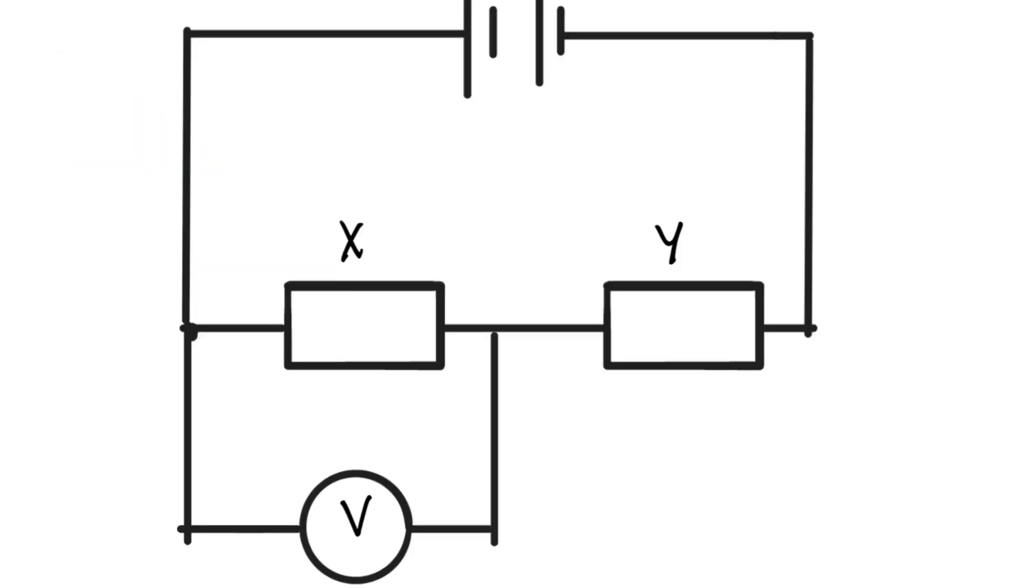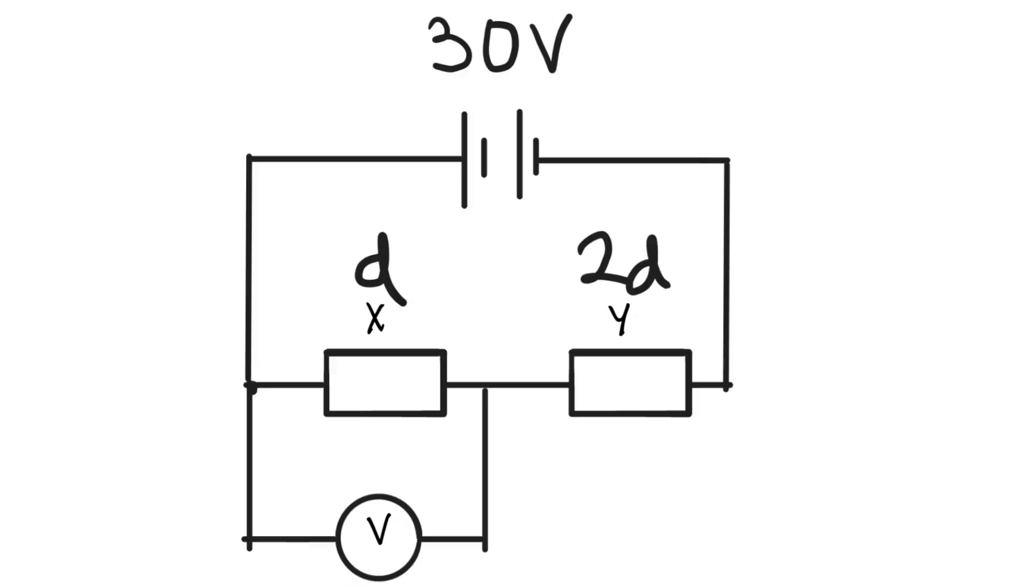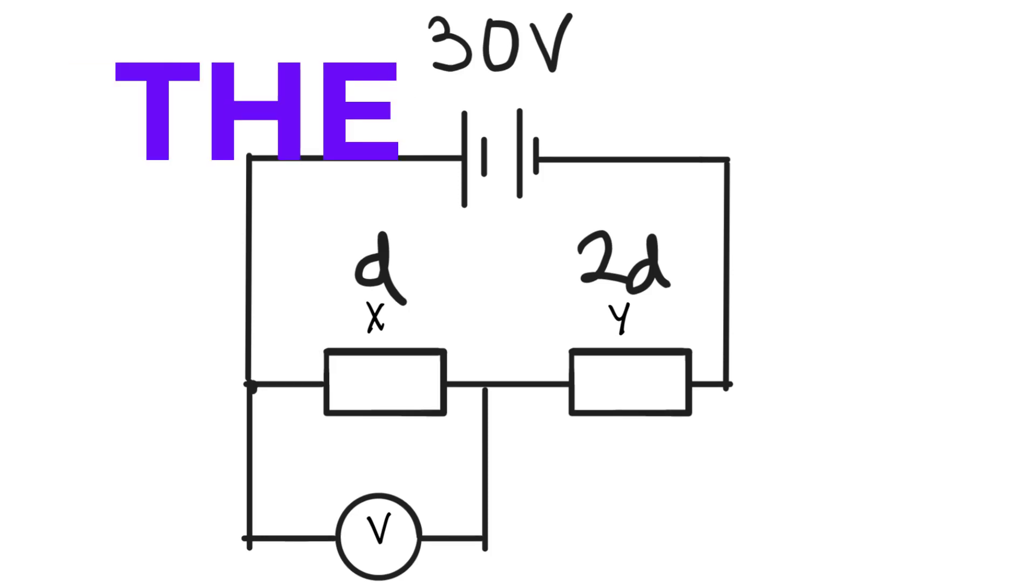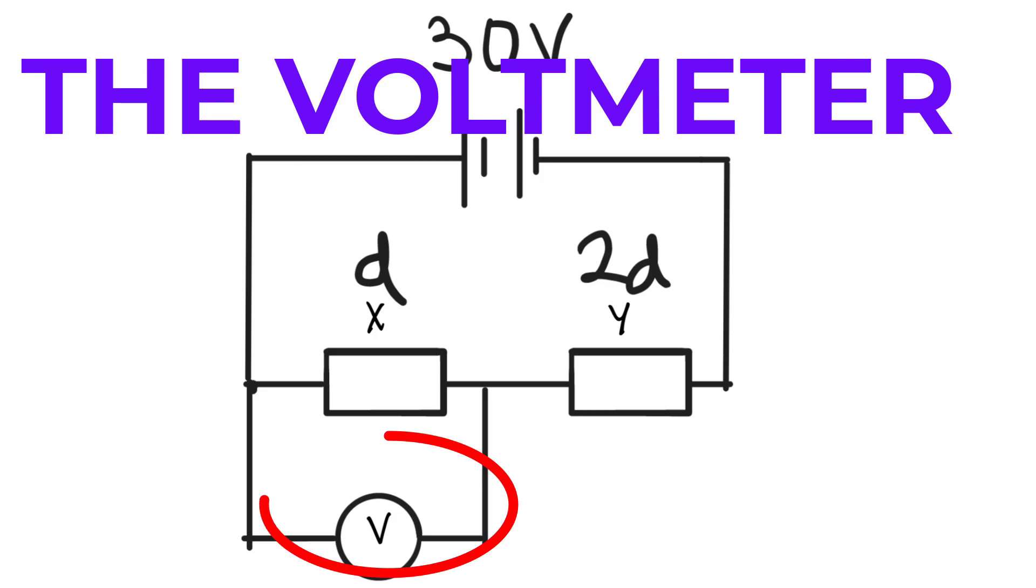We have a power supply with 30 volts and two resistors X and Y. The diameter of X is equal to D, whereas the diameter of Y is equal to 2D. Both resistors are made out of the same material, meaning that they have the same resistivity. Find the reading of the voltmeter.